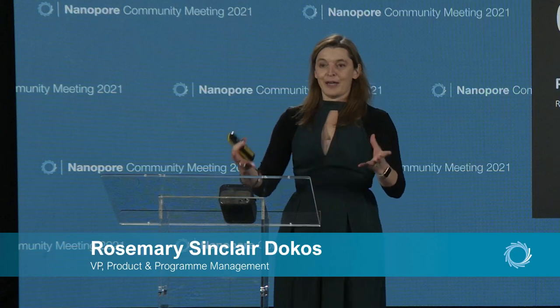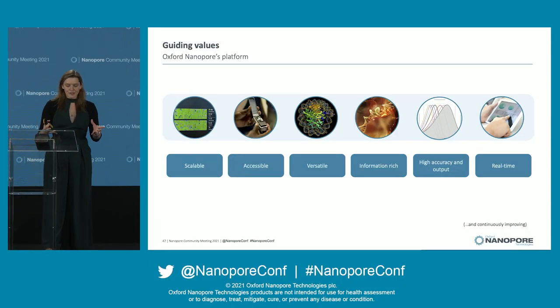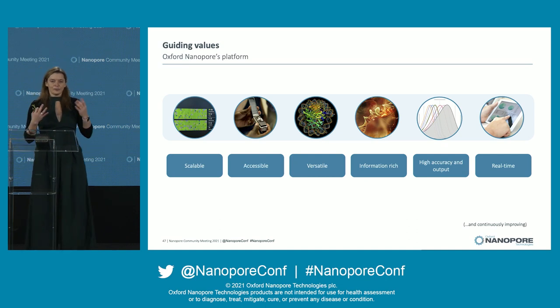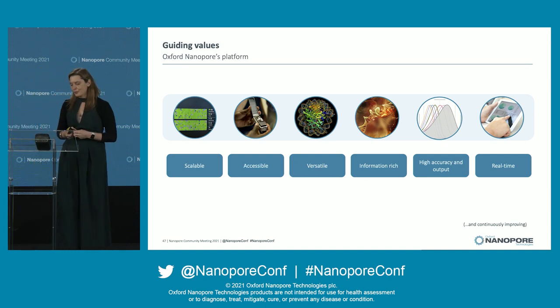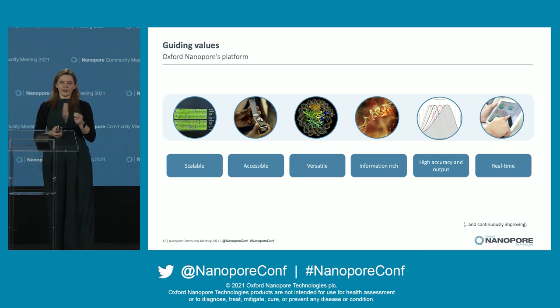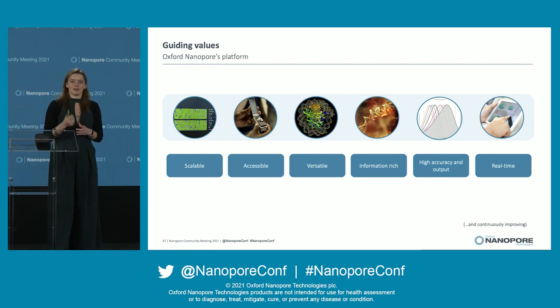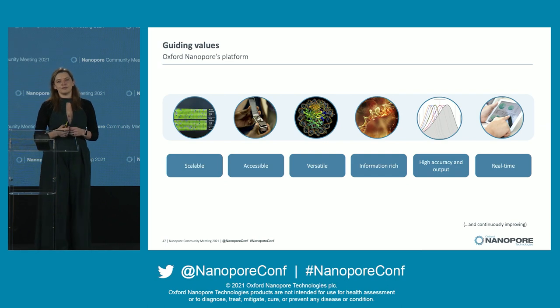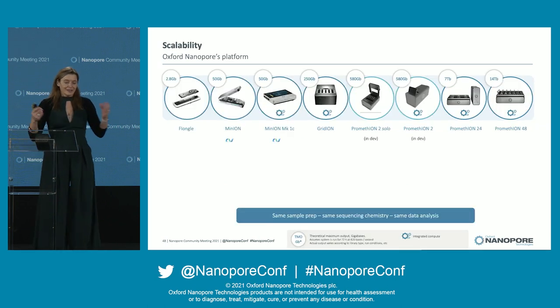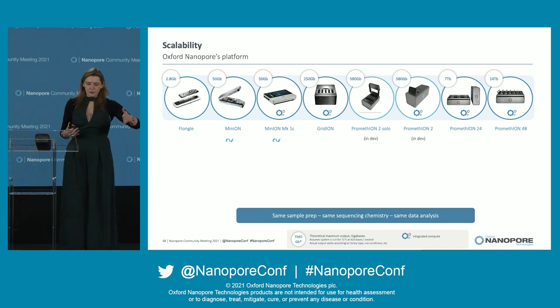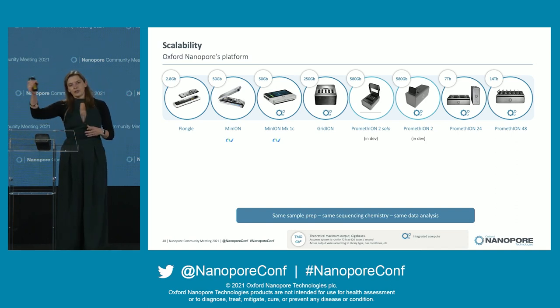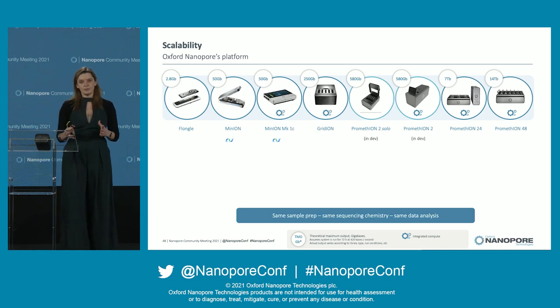I'm here to talk about how we package all of this amazing innovation and release it and get it into your hands as quickly as possible. To summarize the Oxford Nanopore platform: it's a scalable platform, highly accessible, very versatile, information-rich, incredibly high accuracy, high output, and we deliver the information in real time. Around that scalability, we start from Flongle at 2.83 gigabases per flow cell, all the way up to the Promethium P48 which delivers 10 terabases in a single run. We sell all of these products as consumable-only items — you buy starter packs and get access to the device.